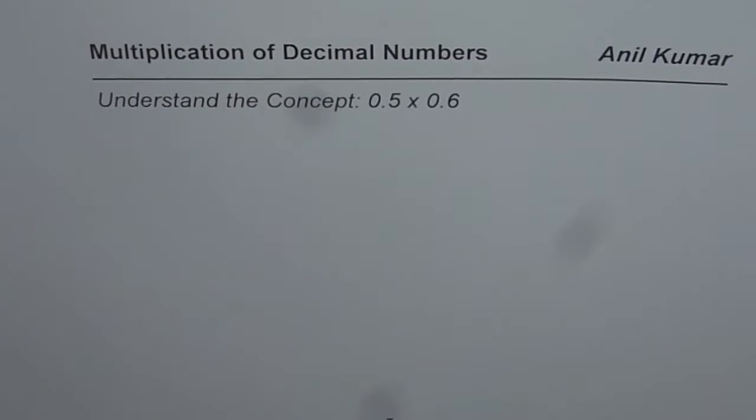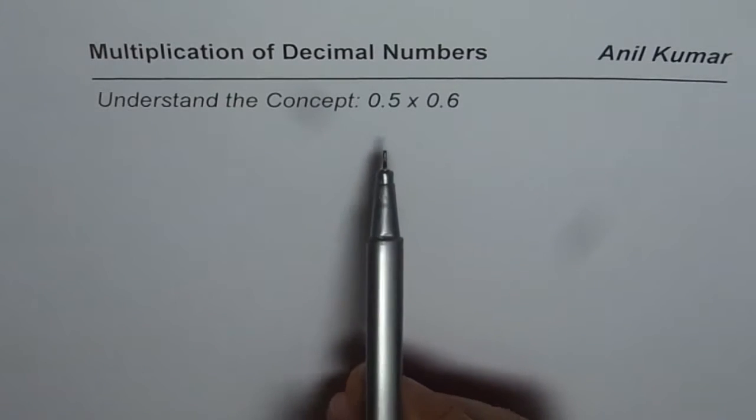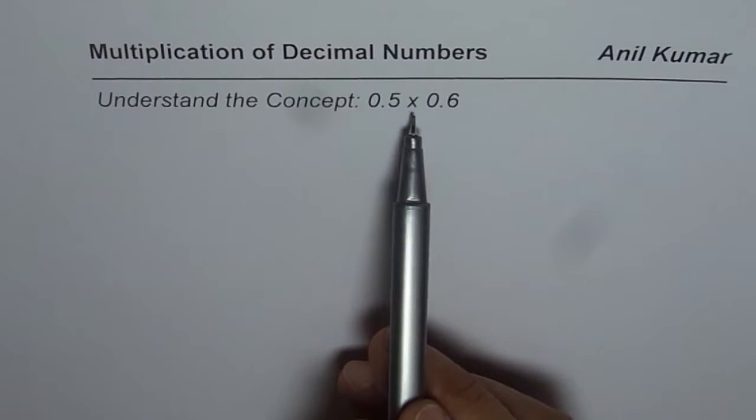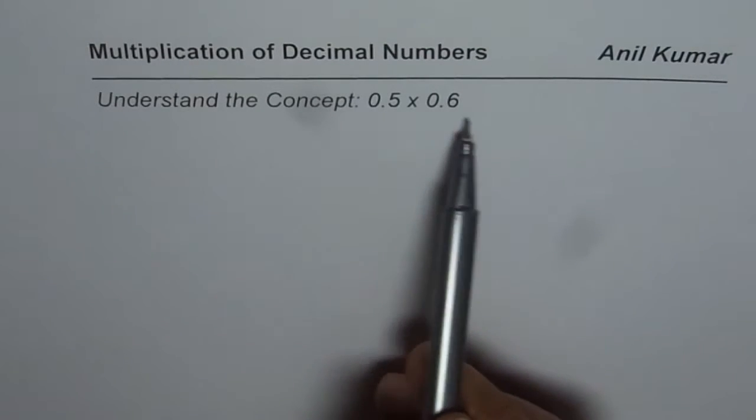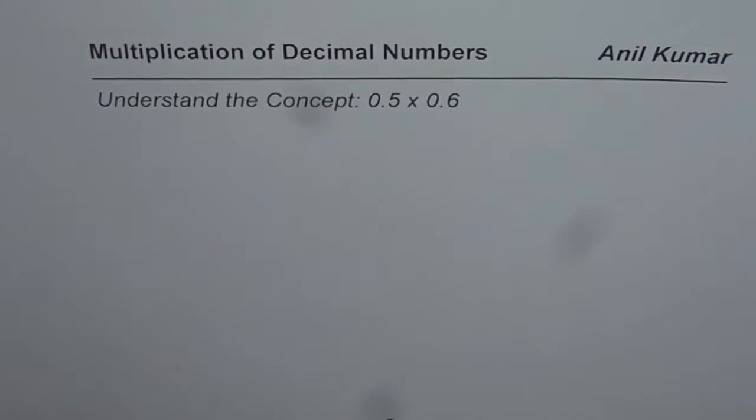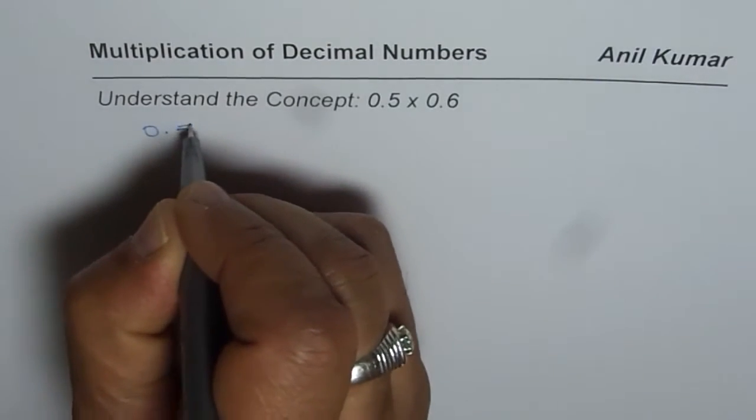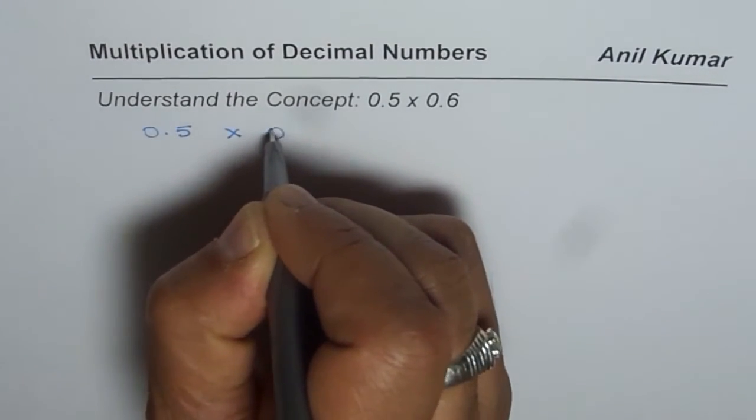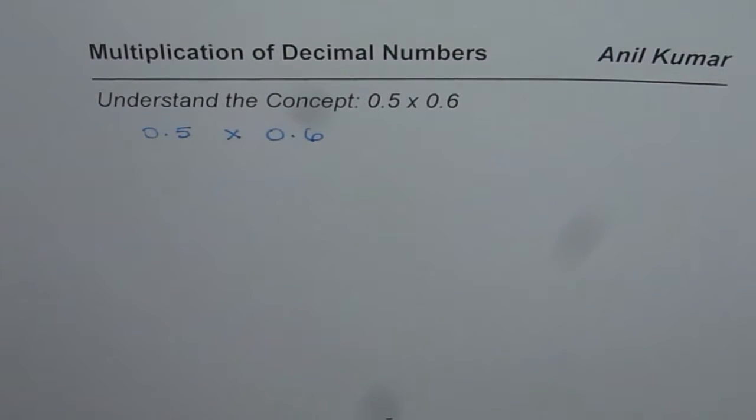I am Anil Kumar. In this video we will understand the basic concept of multiplying decimal numbers. We have taken a very simple example to start with which is 0.5 times 0.6. Now let us understand how to multiply these decimal numbers. So we want to multiply 0.5 by 0.6. We will see it in different ways.